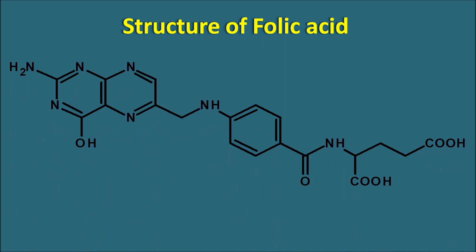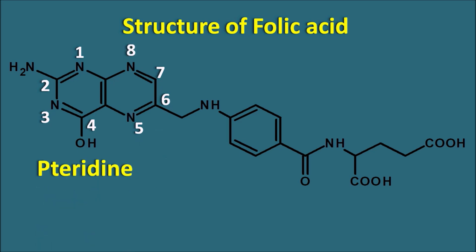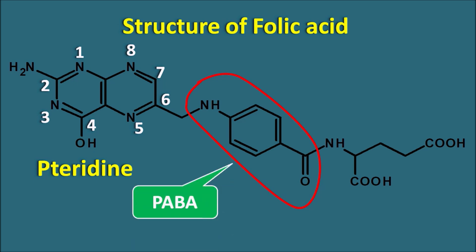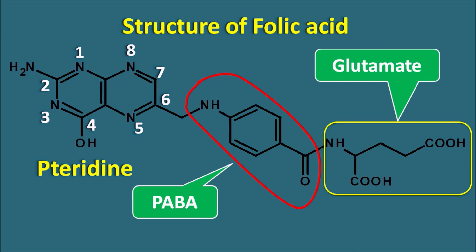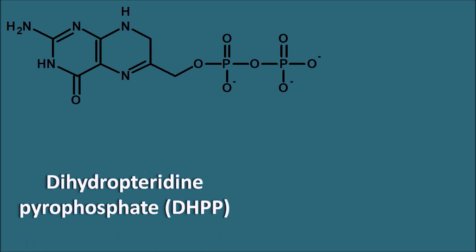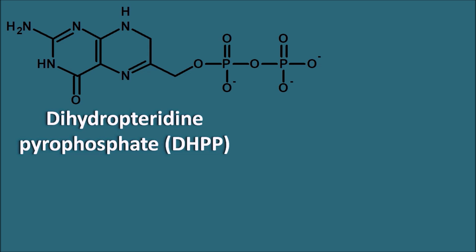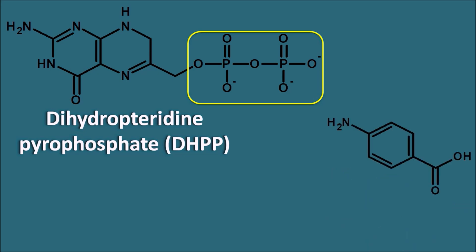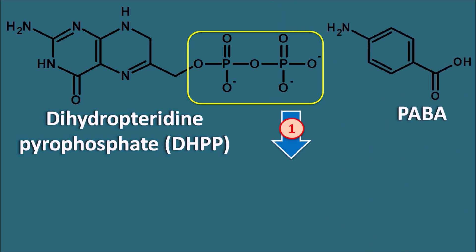The structure of folic acid can be split into three parts. The heterocyclic ring system is the pteridine ring system, numbered 1 through 8. This pteridine ring is attached to para-aminobenzoic acid (PABA) at position 6 via a methylene group. At the terminal end is the amino acid glutamate, which can be polymerized to produce a polyglutamate form. One important component in folic acid synthesis is DHPP (dihydropteridinepyrophosphate), whose pyrophosphate bond is removed when PABA combines with it.